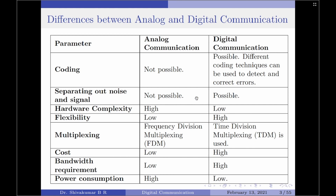In analog communication, separation of noise and signals is almost not possible or can be considered highly complex, whereas in digital communication separation of noise and signals at the receiver is possible and requires suitable modifications to the receivers.